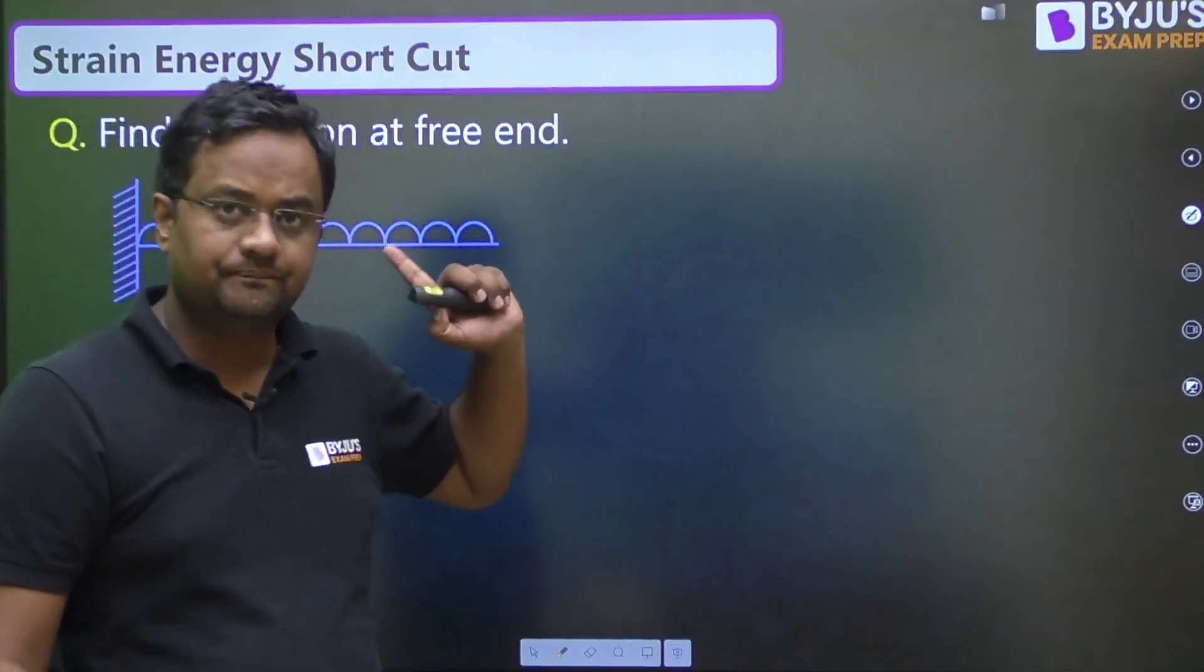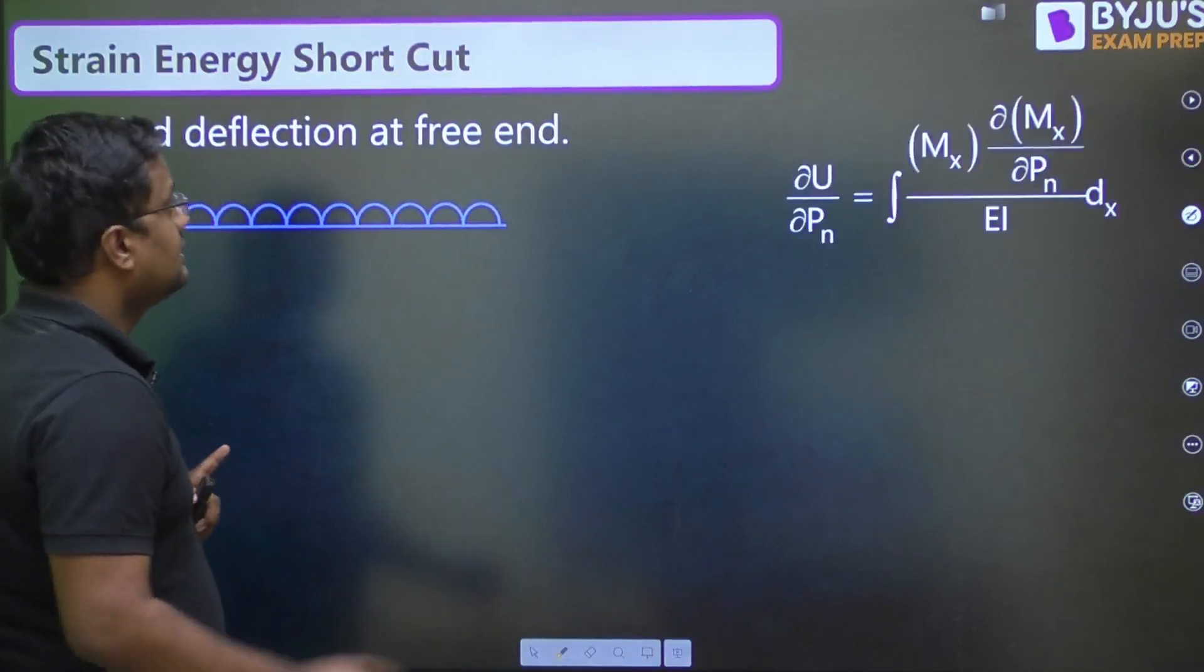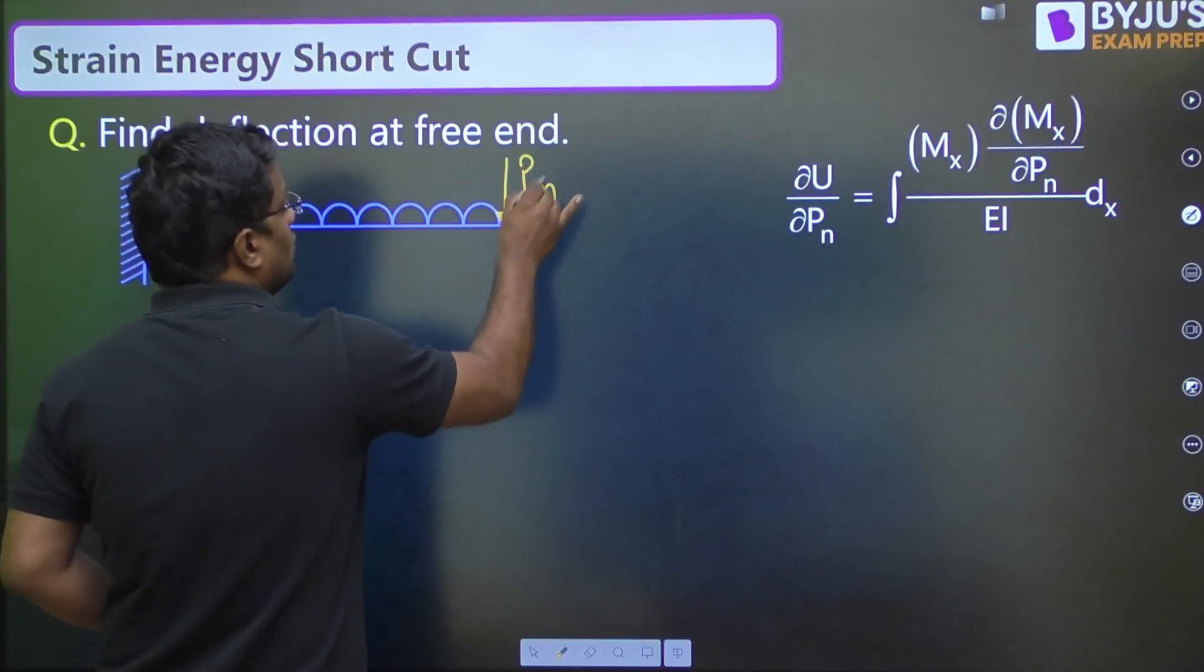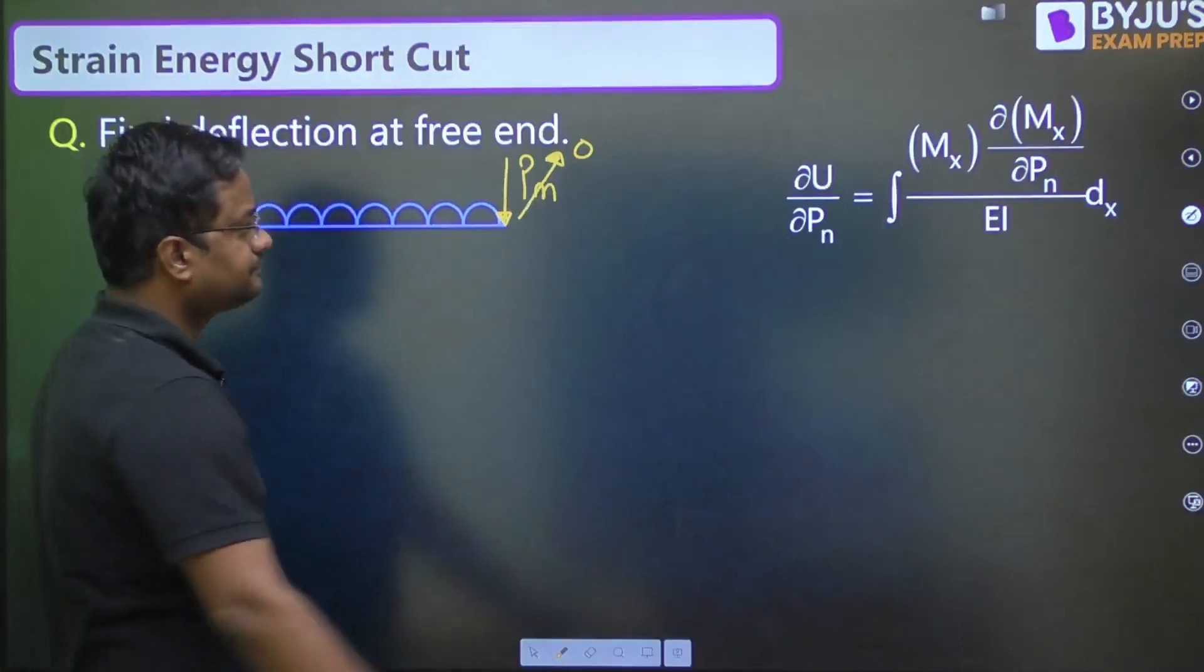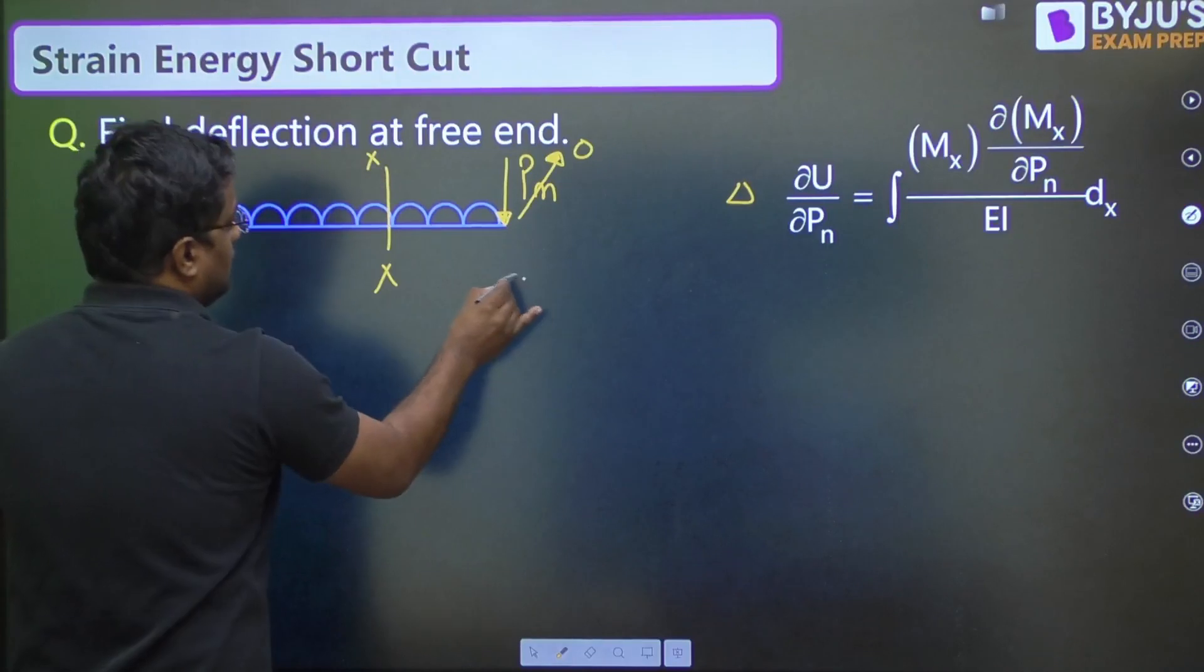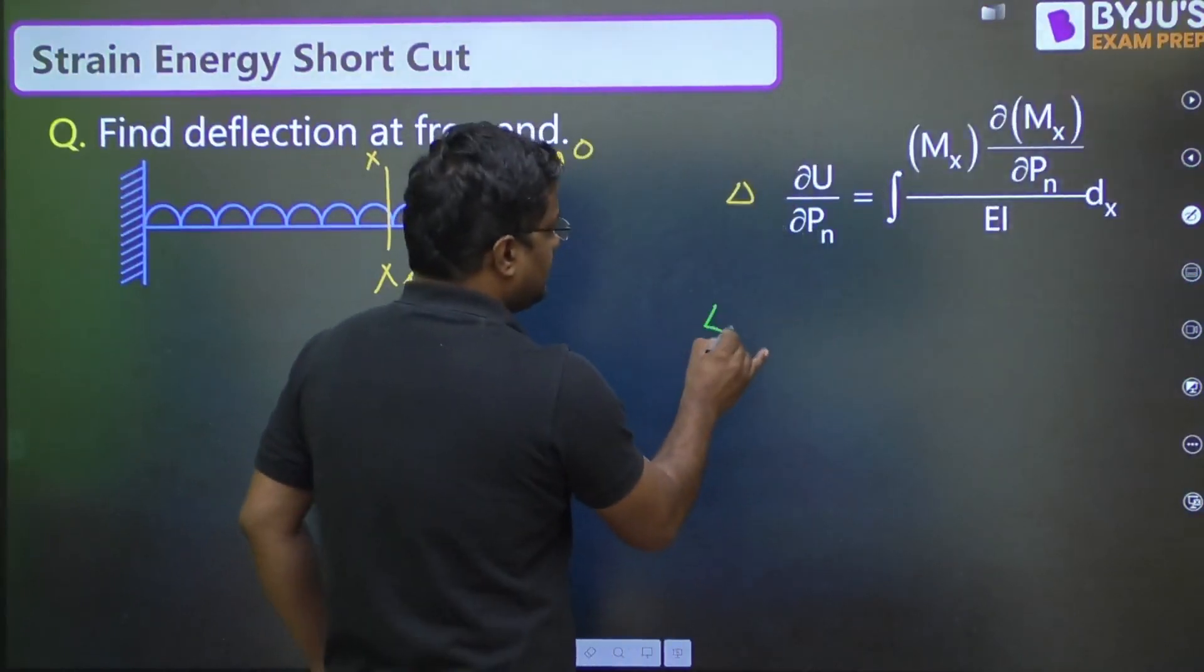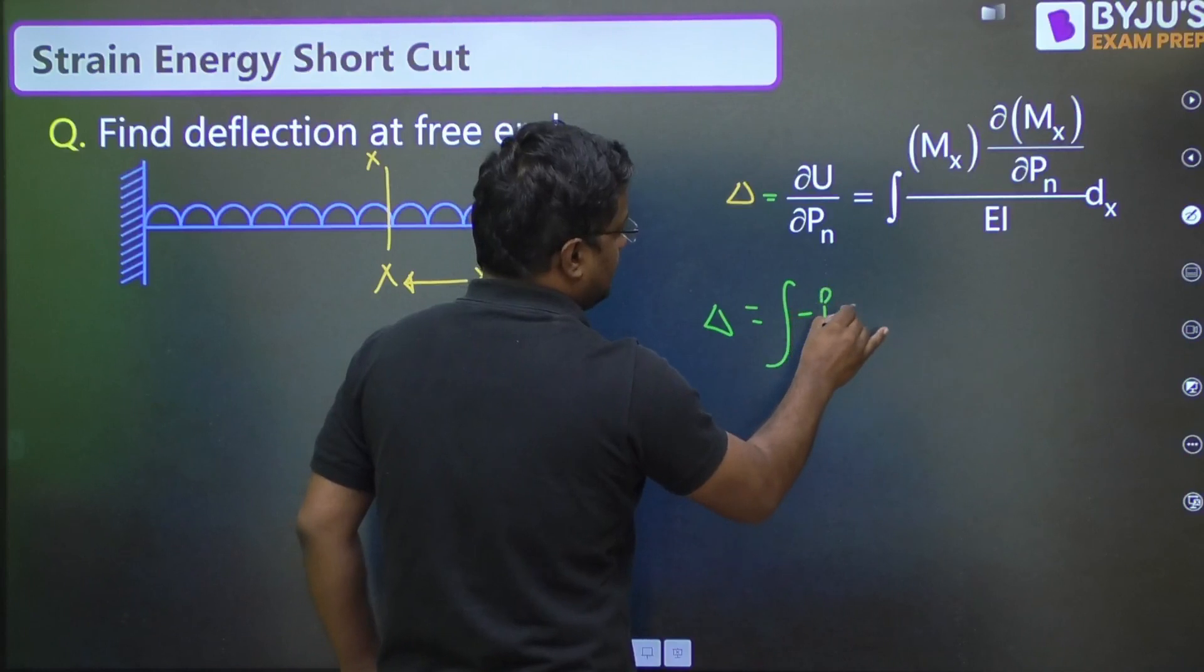So, I want deflection at the free end. Now, deflection at the free end, wherever the deflection is required, the first step, put a load there, PN. And actually, there was no load. So, at the end, we can make it 0. Not at the end, after the first step only. So, if I take a section XX here, at X distance. Now, where is the green color? Green color is here.